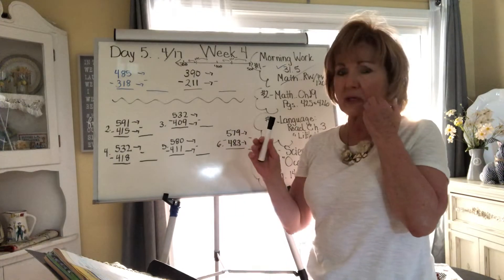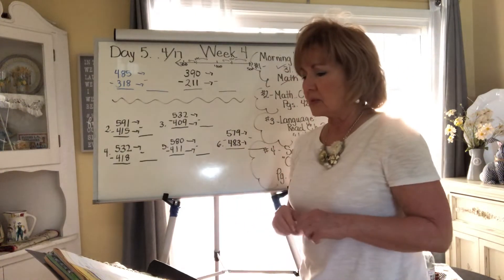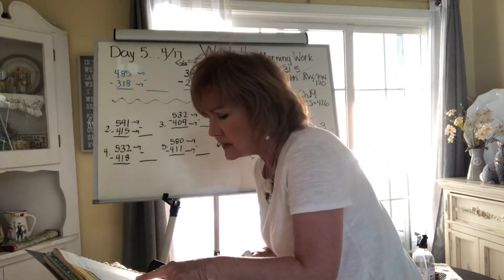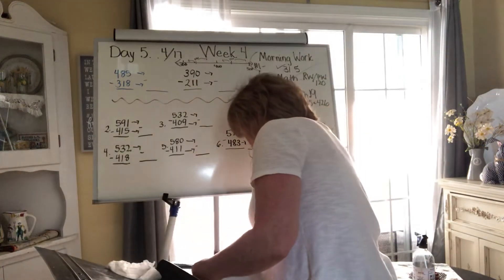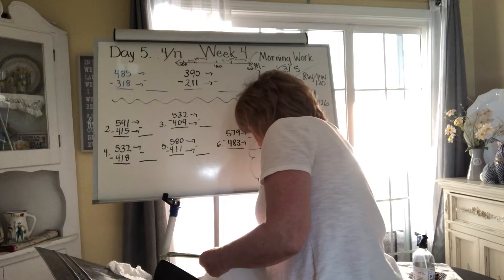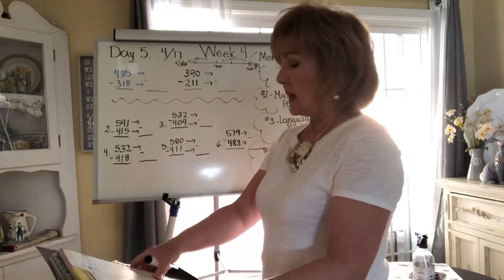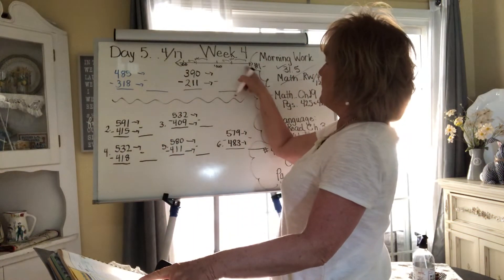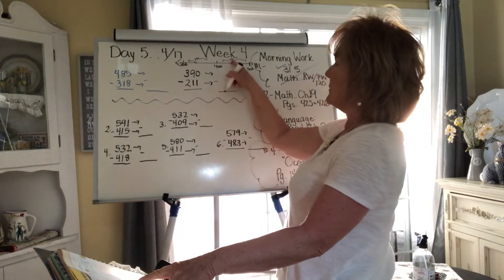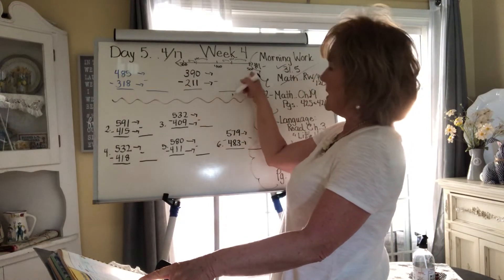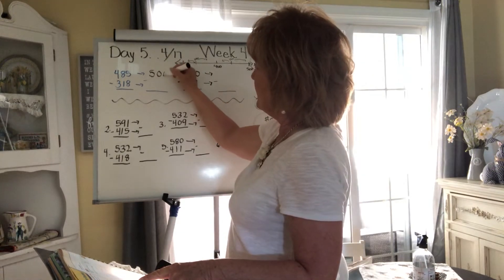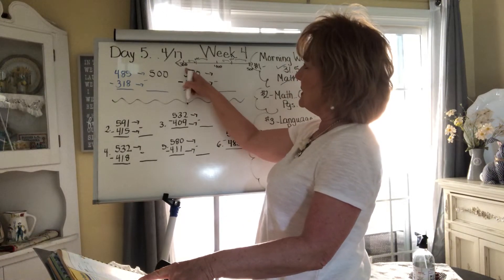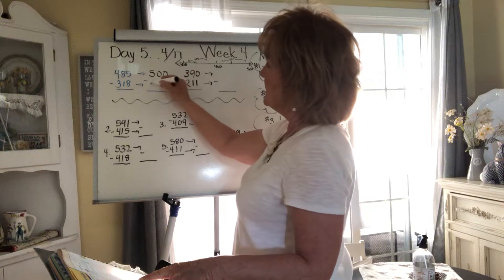Let's do some together. We're looking at number two — it's 485. Does 485 round up or down? Is 485 greater than 450? Is 85 more than 50? Yes, so that would be 500. Now 318 — is 318 greater than 350? Is 18 more than 50? No, so it rounds down.